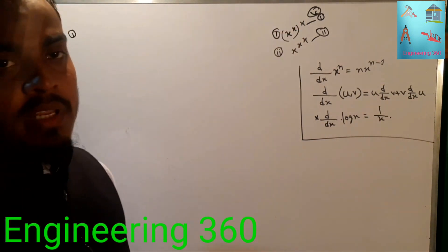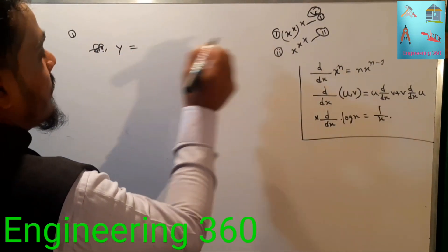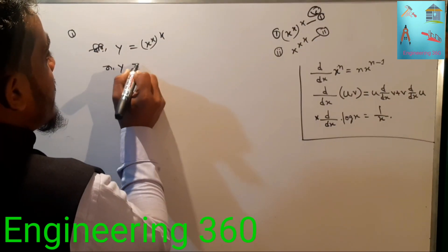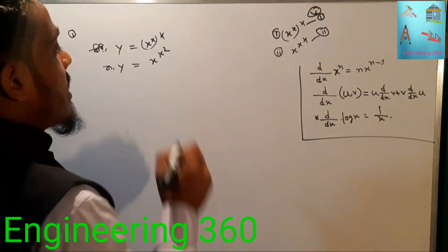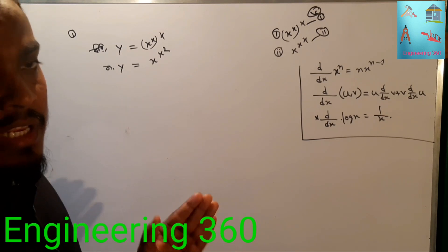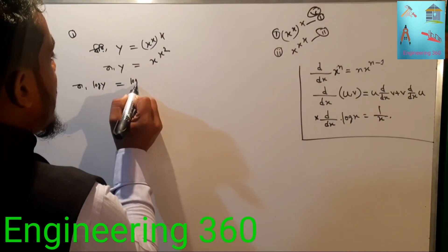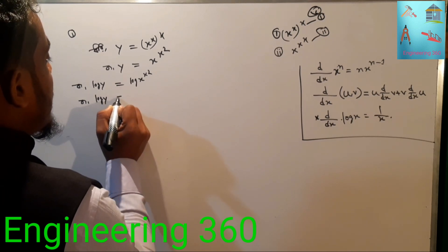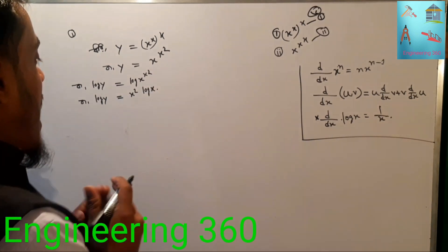Now the problem: given y equals x to the power x to the power x. Taking logarithm on both sides: log y equals x squared times log x. We will differentiate both sides with respect to x.